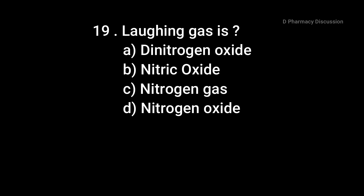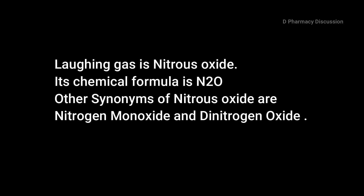Question 19: Laughing gas is — option A: dinitrogen oxide, B: nitric oxide, C: nitrogen gas, option D: nitrogen oxide. Correct answer is option A, dinitrogen oxide. Its chemical formula is N2O, and other synonyms of N2O are nitrogen monoxide and dinitrogen oxide.